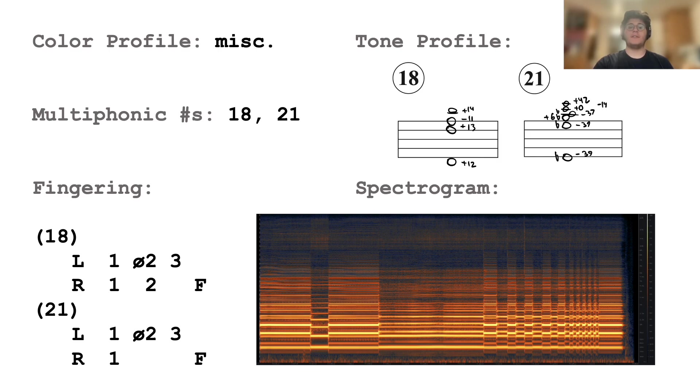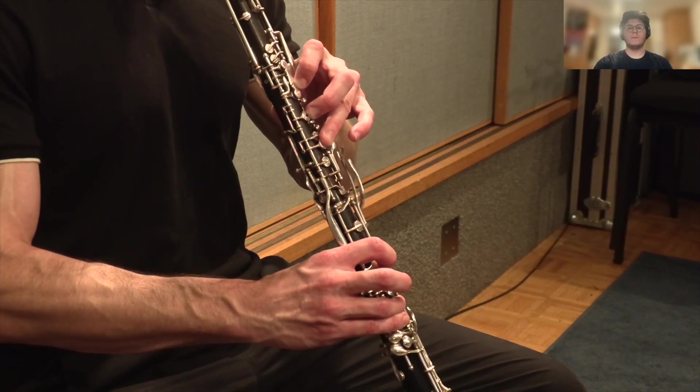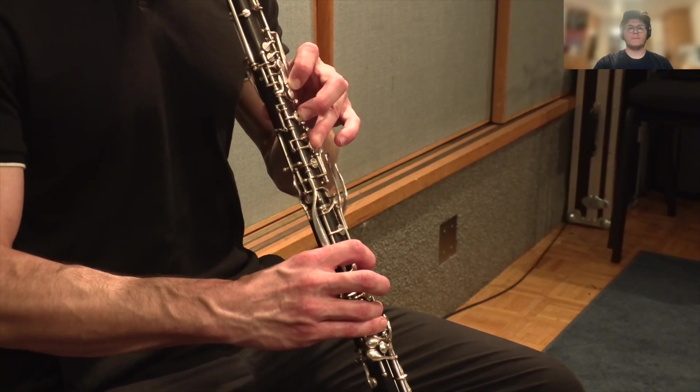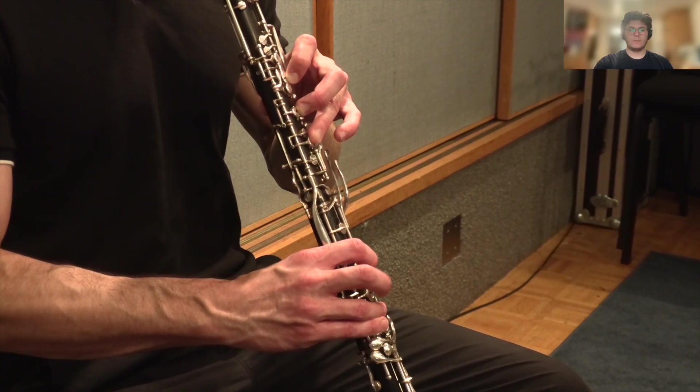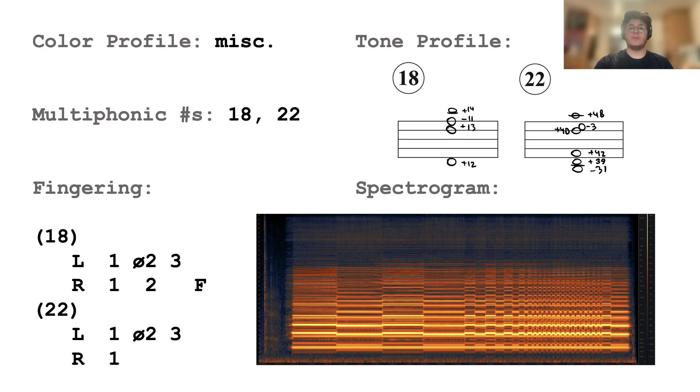For this pairing, the performer will toggle the second key in the right hand. For this pairing, the performer will toggle the D-flat key in the right hand. Multiphonic 22 was found as an adjacent fingering to multiphonic 18.